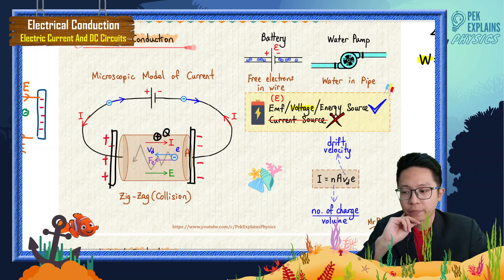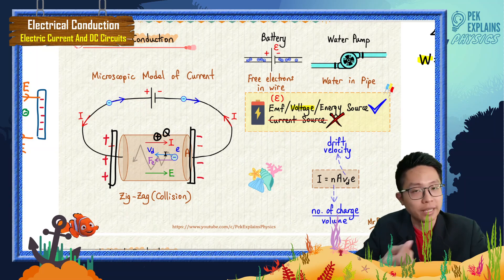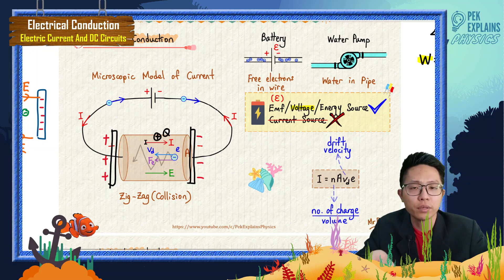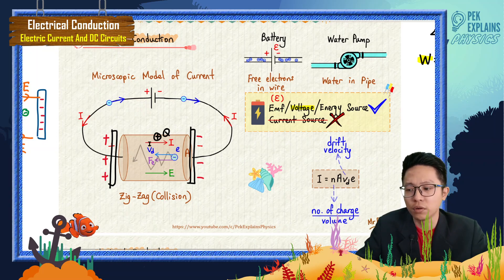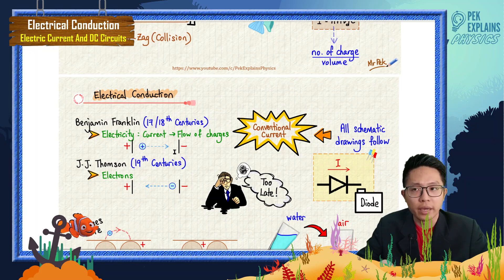Back to the question: why do current and electrons flow in opposite directions? Electrons flow, not positive charges. Since it is only the electron that flows, why do we talk about current as a flow of positive charge? Why not just use the flow of electrons, since that is sufficient for our understanding?